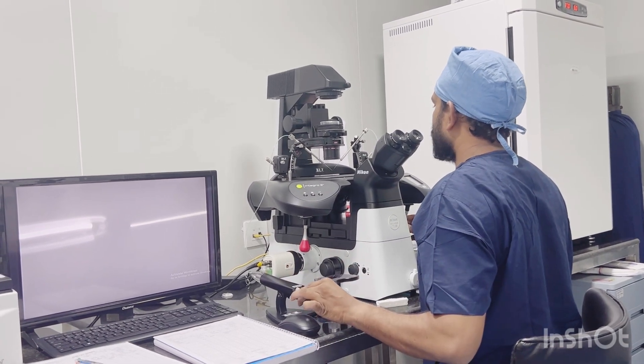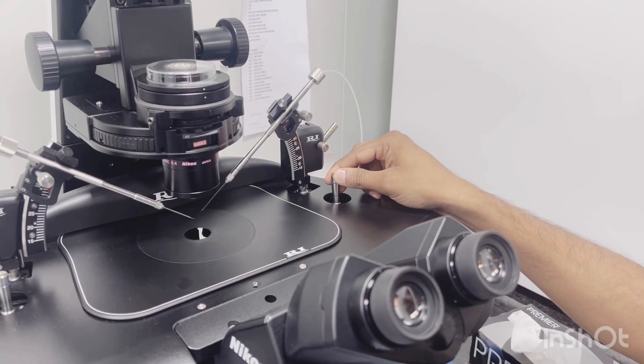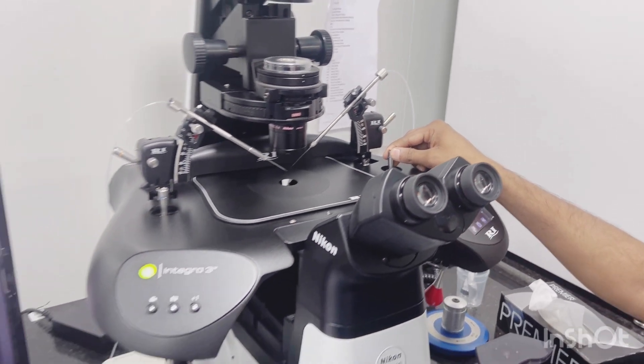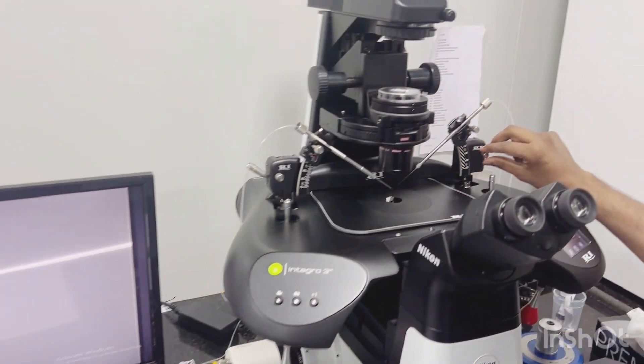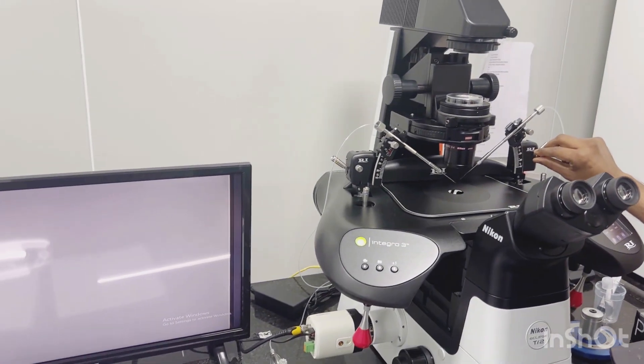By this way, we can align our injecting pipette. The use of this knob allows us to position the injecting and holding pipettes where we want. The second knob here is the centering knob - by using this, we can center our injecting and holding pipettes.